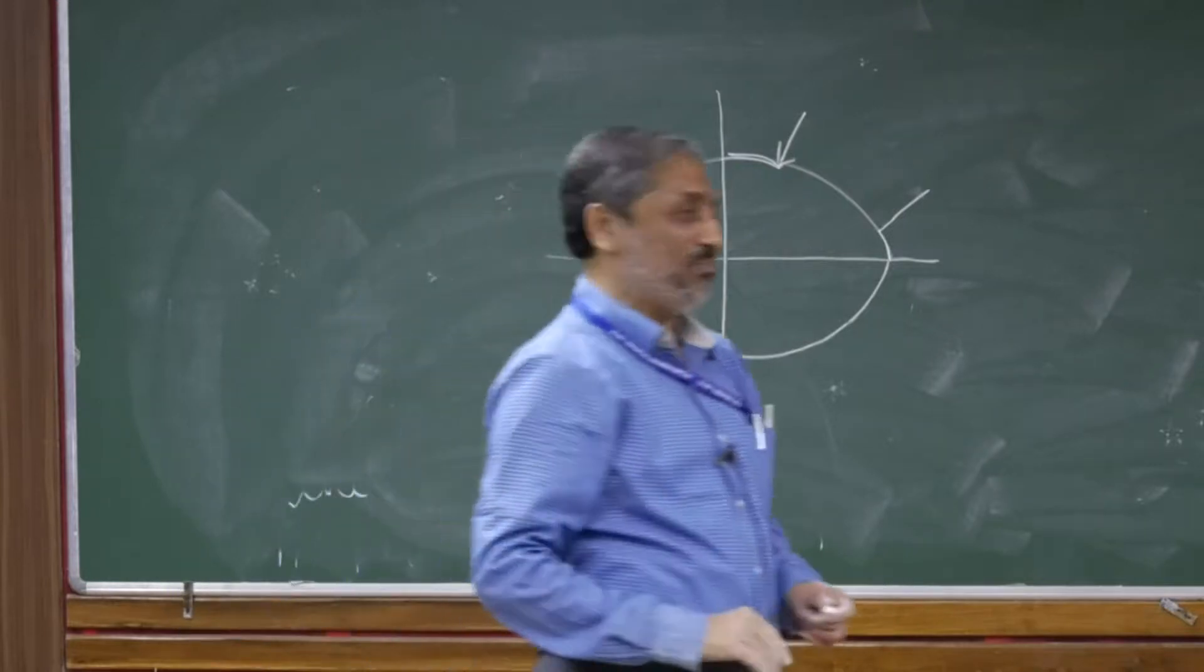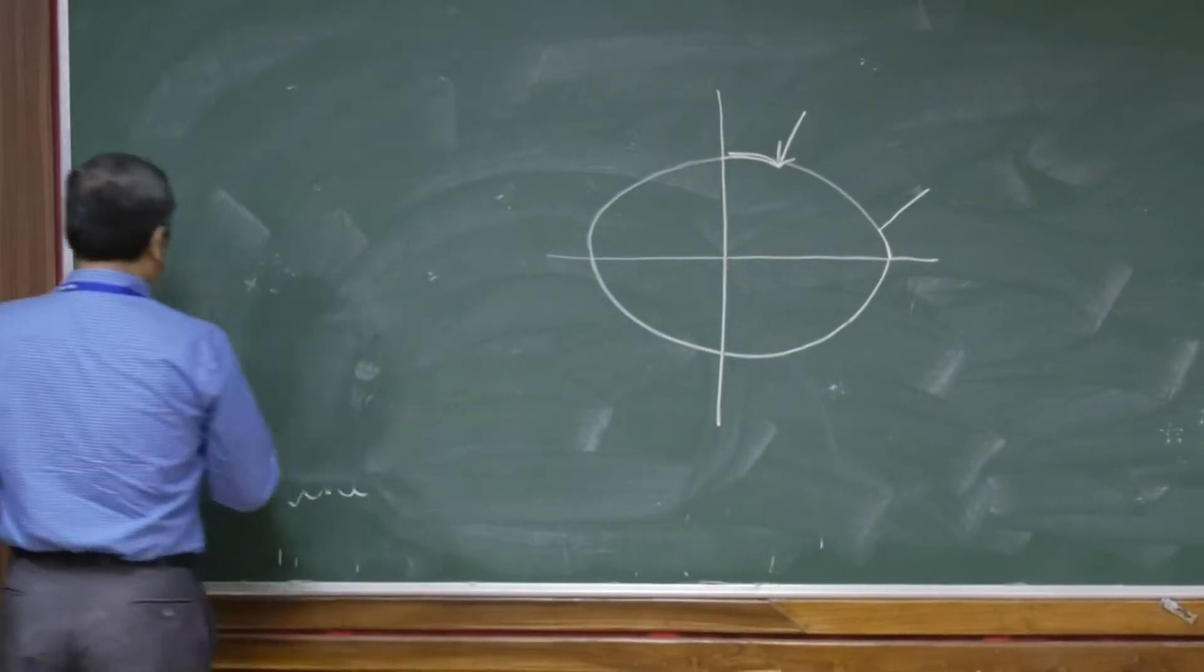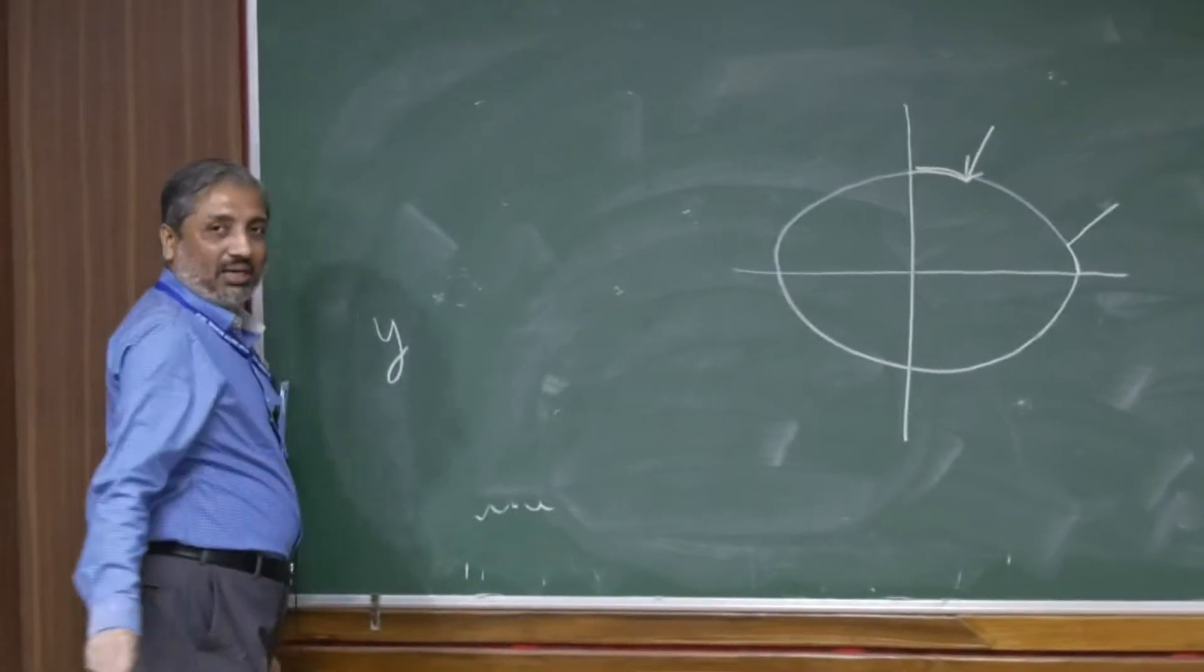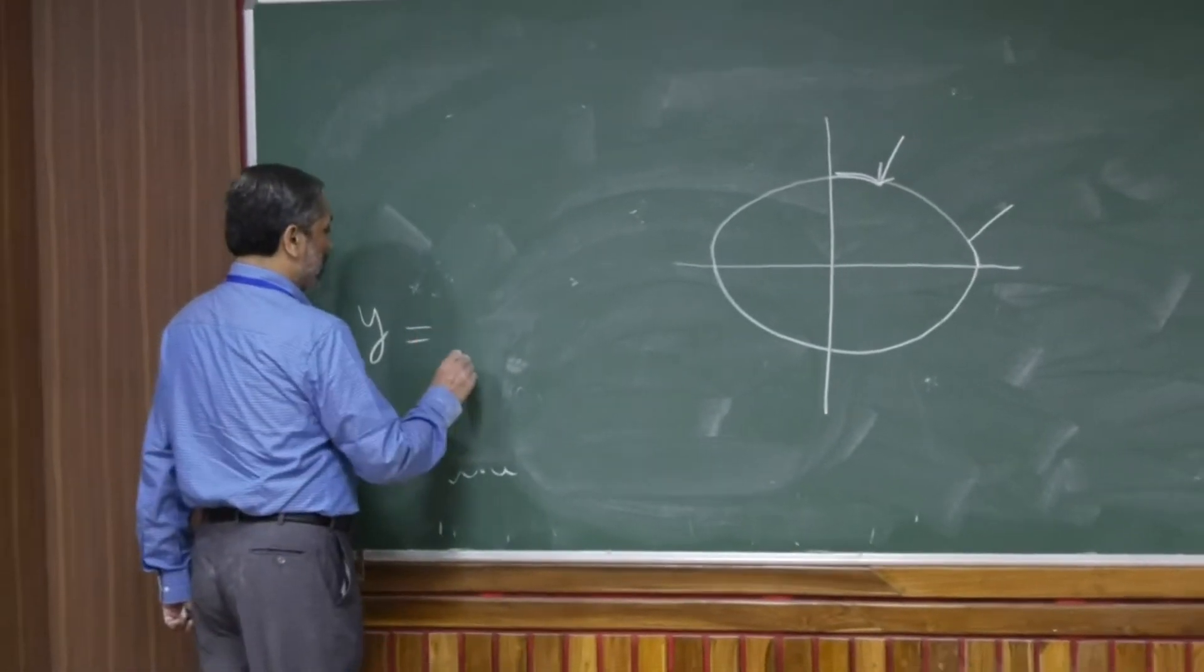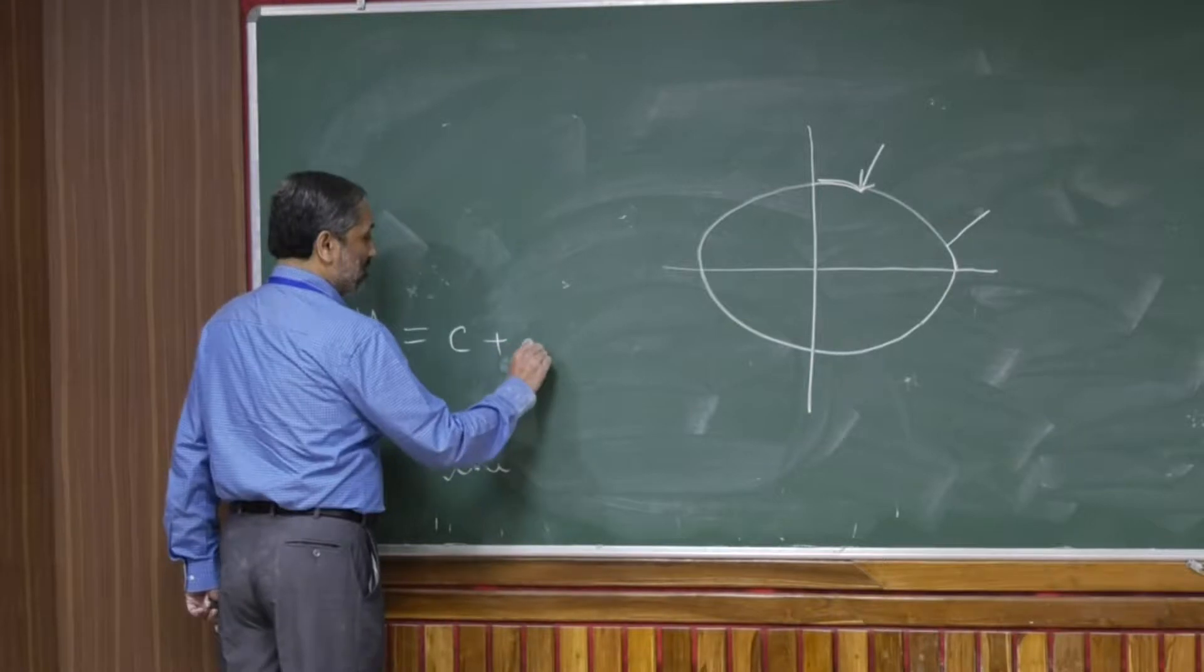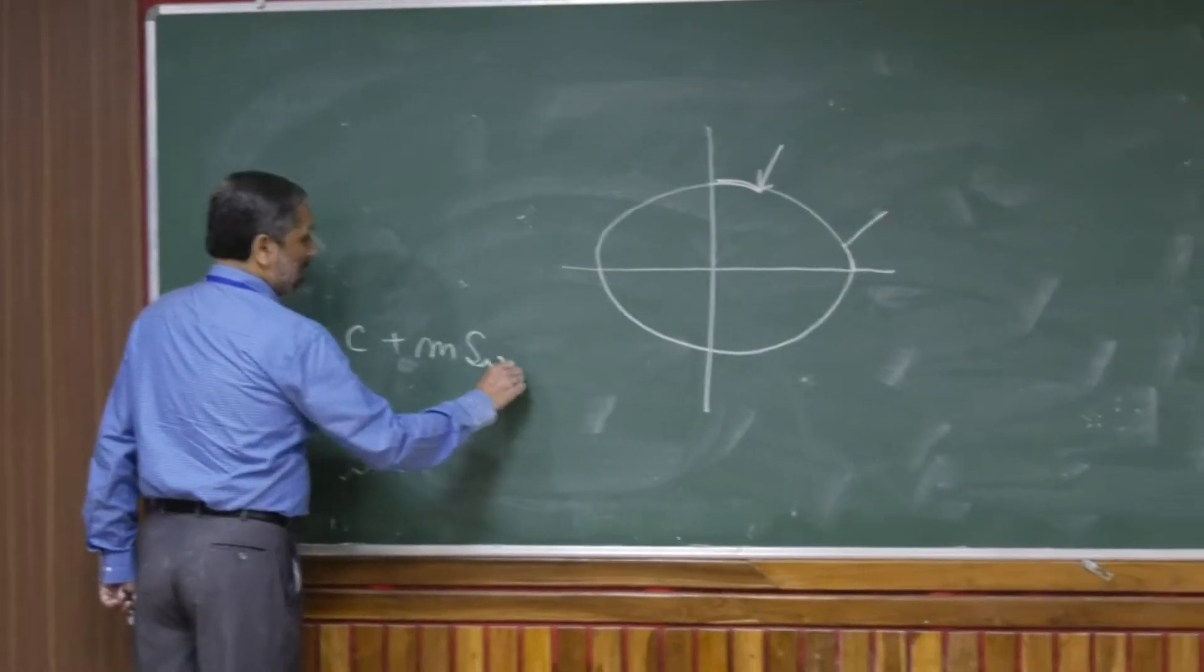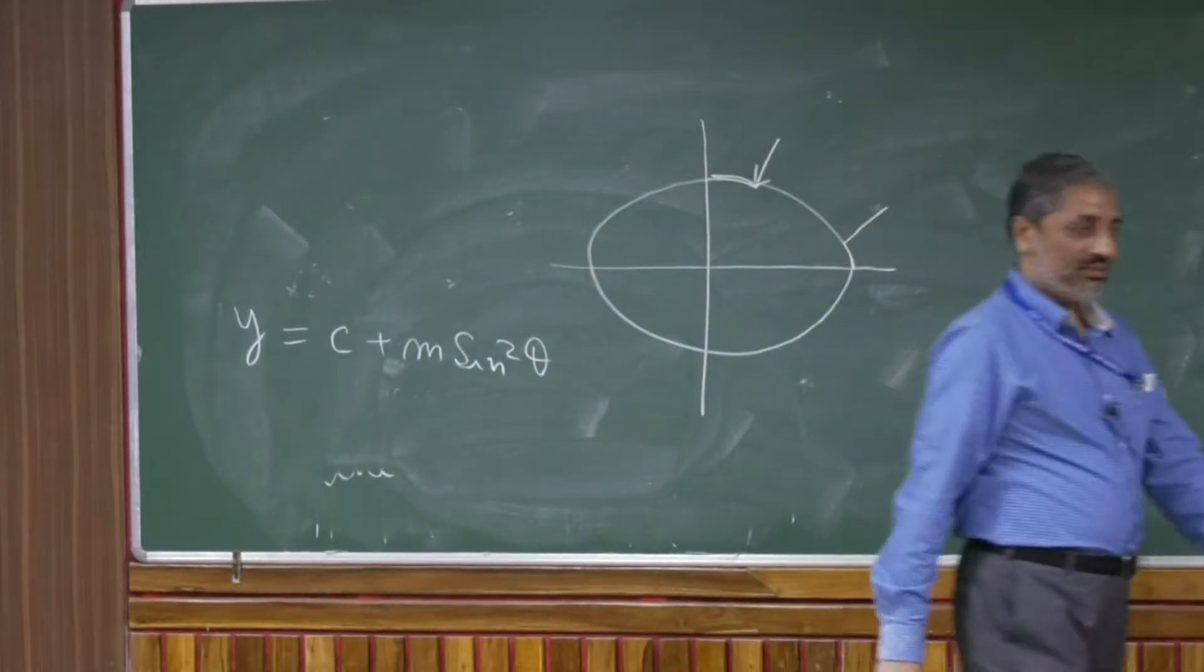In fact, for ellipse, they found out that there is an approximate relationship like this. If you denote y equal to the arc length for 1 degree latitude at latitude theta, then y is equal to some constant c, and then some constant m into sine squared theta. Approximately this. I think I am writing it correctly, the formula.